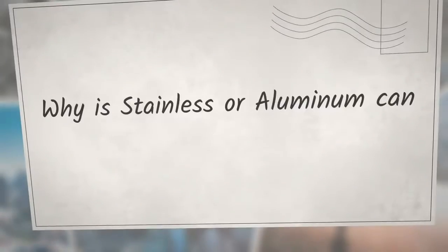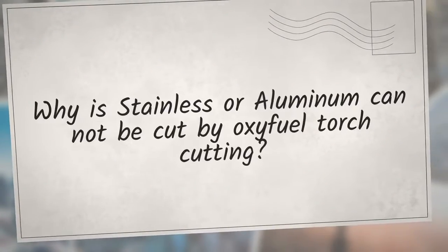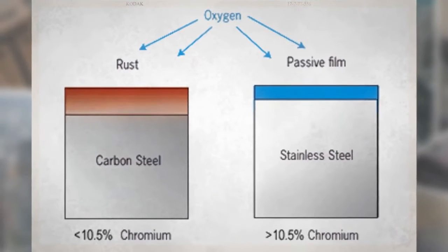Why is stainless or aluminum cannot be cut by oxyfuel torch cutting? Stainless steel and aluminum have an oxide layer on their outer surface and the melting temperature of these oxides is much higher than the base metals.